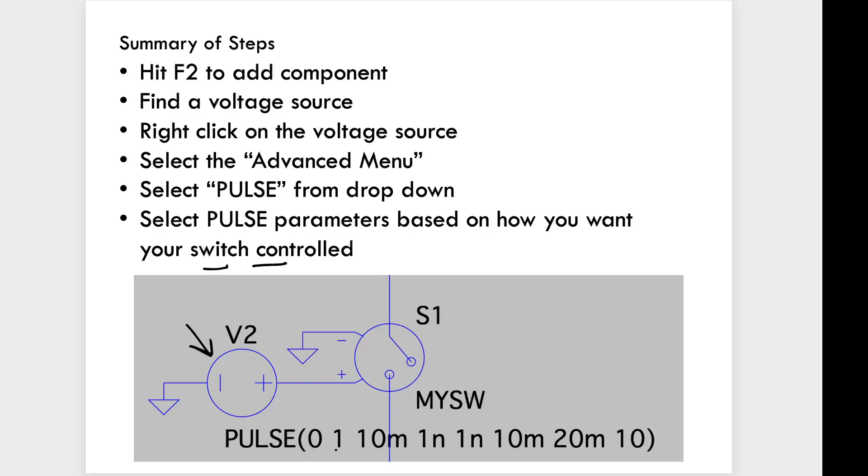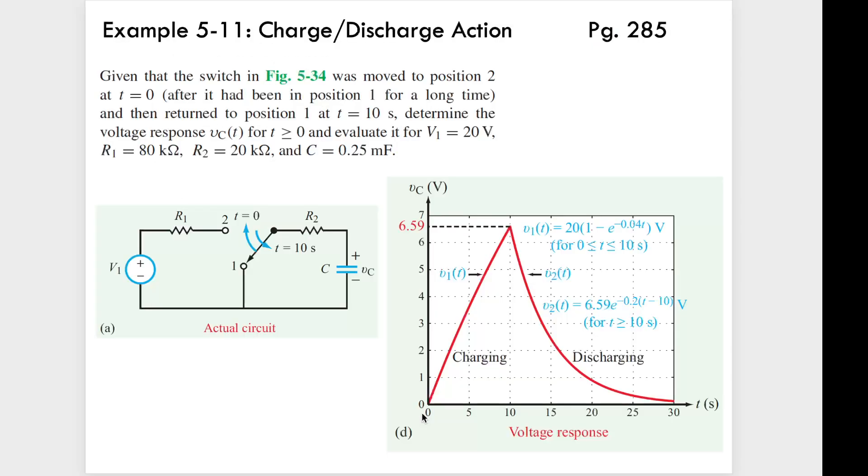So this is the point. Once you have this arranged, the pulse here, the pulse, the voltage controlled pulse, that is going to control the switch. And this is where you're going to select, carefully select the voltages so that you can get your switch to operate in the way that a problem statement asks. So for example, going back to that Ulaby one, it says that you have a switch that's moved into position two after being in position one for a long time. And then it returns to position one at time 10 seconds. So it does some charging and then some discharging.